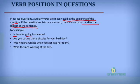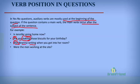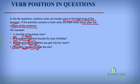More examples: 'Are you baking those biscuits for your birthday?' — auxiliary verb 'are,' subject 'you,' main verb 'baking.' 'Was Nena writing when you got into her room?' — auxiliary verb 'was,' subject 'Nena,' main verb 'writing.' 'Were the men working at the site?' So in yes/no questions, auxiliary verbs begin the question, followed by the subject and the main verb.